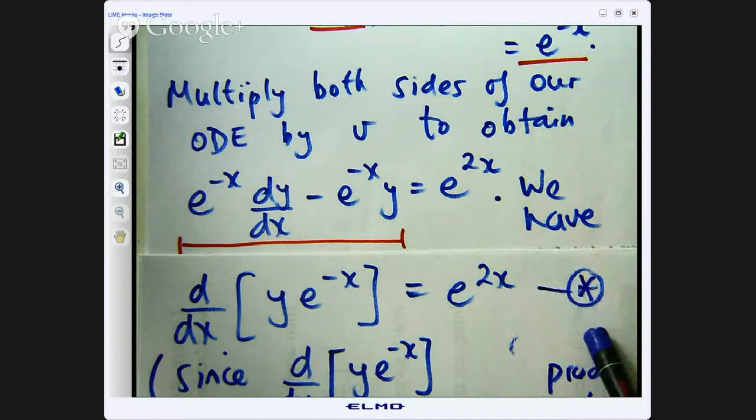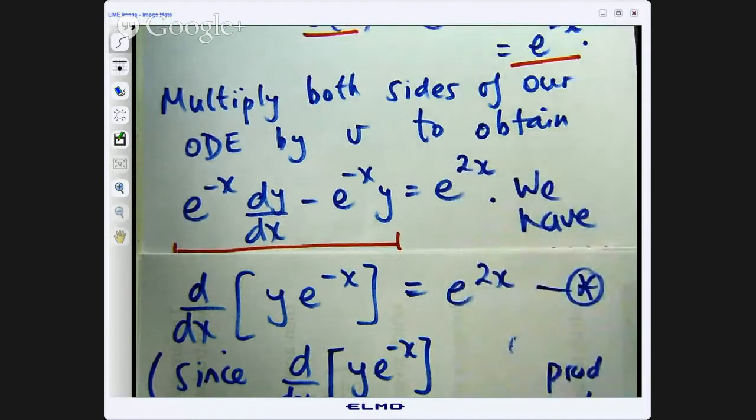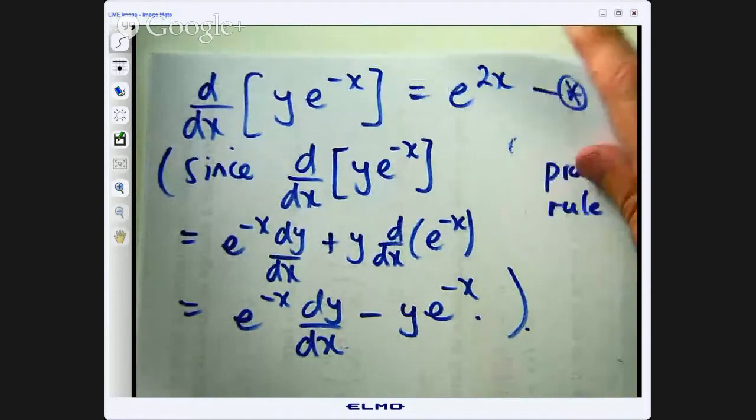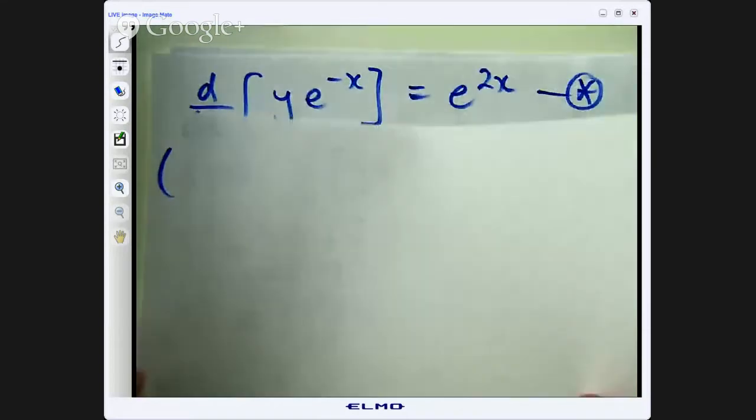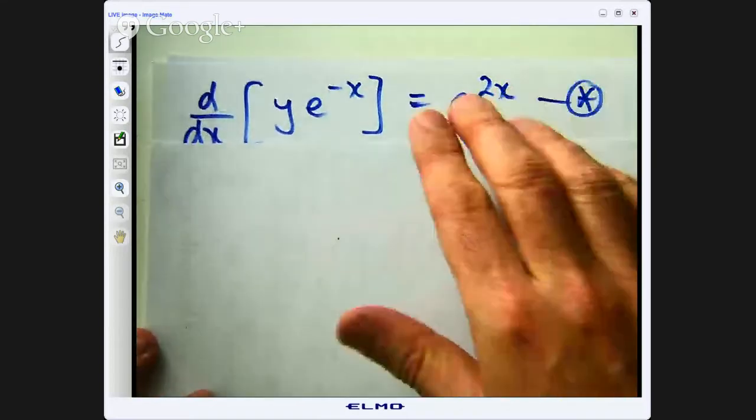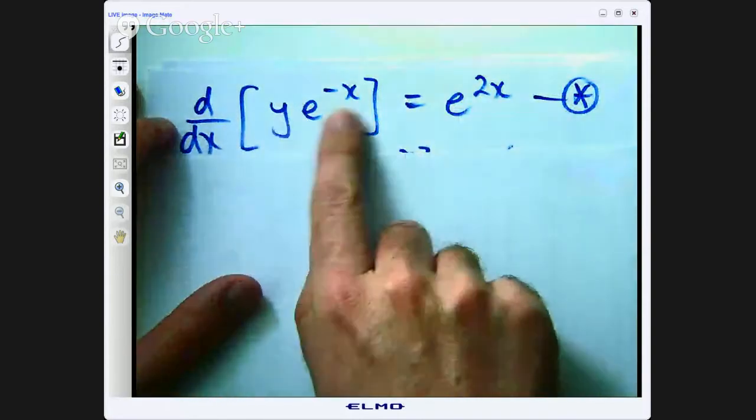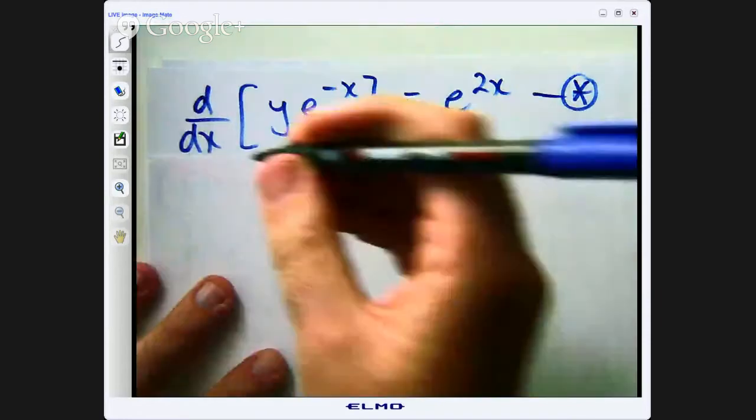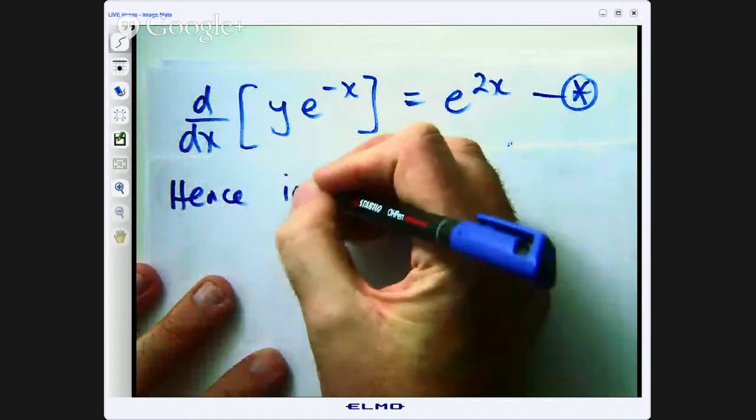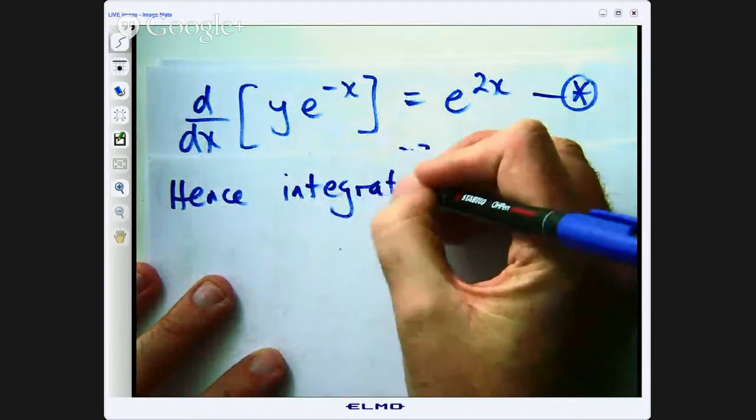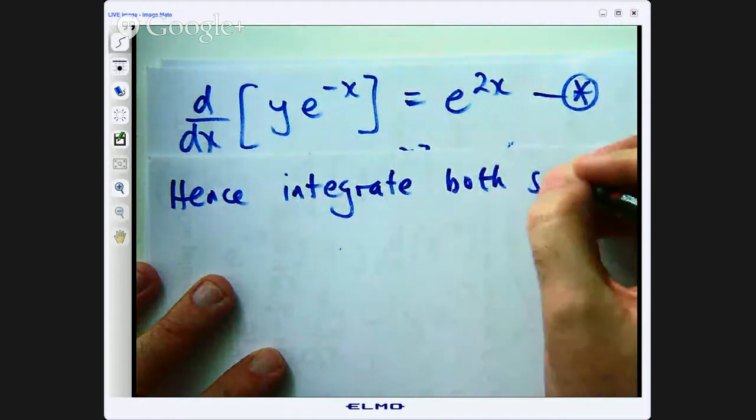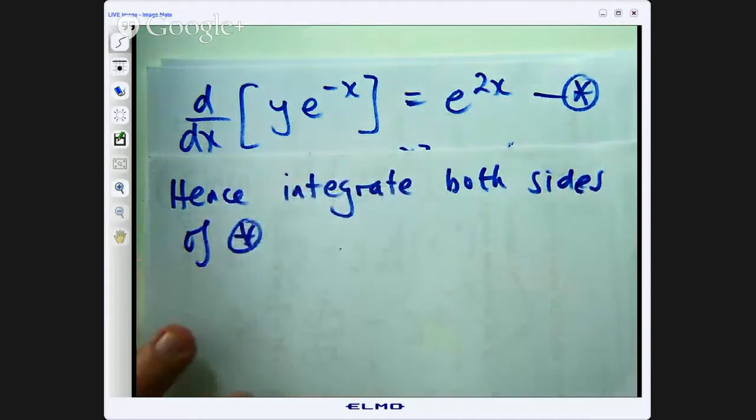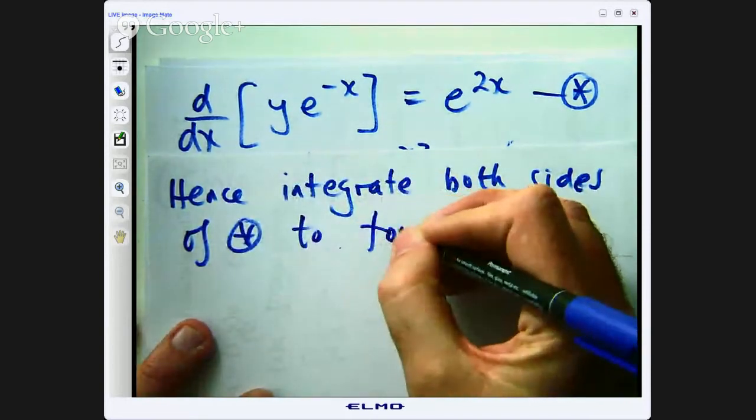So let us move on from star then. Let me start a new page. So what can I do now? Well, I have got the derivative of the unknown function times that, I can integrate both sides of star with respect to x to form the following.